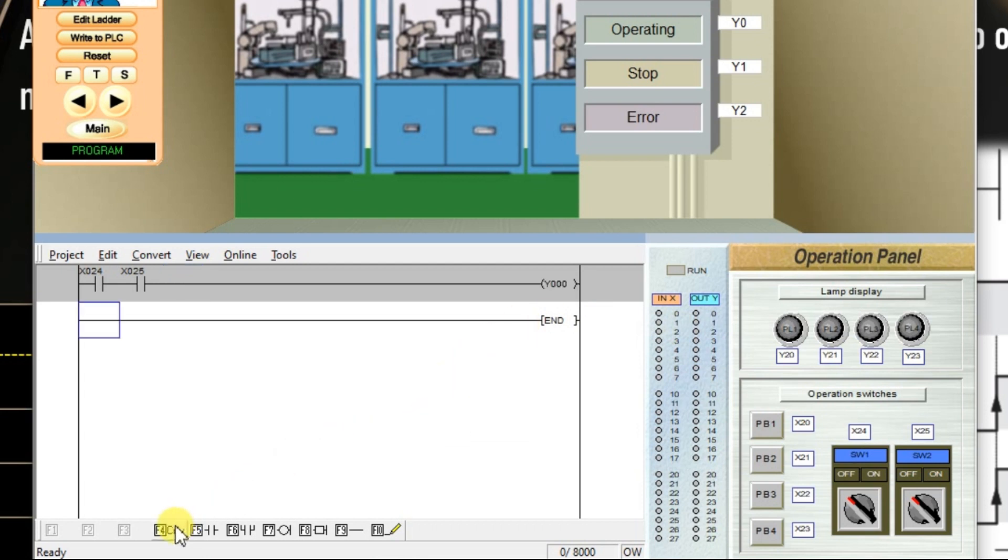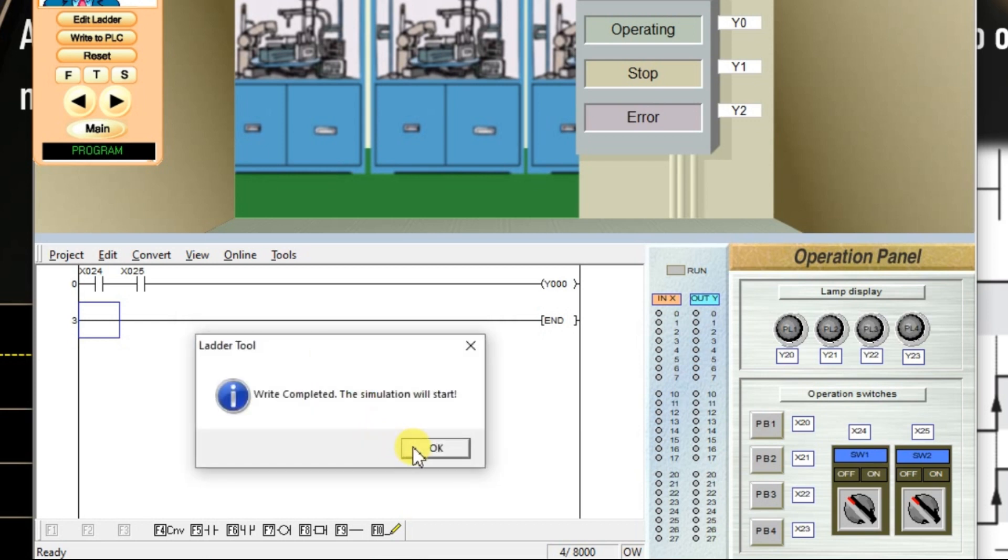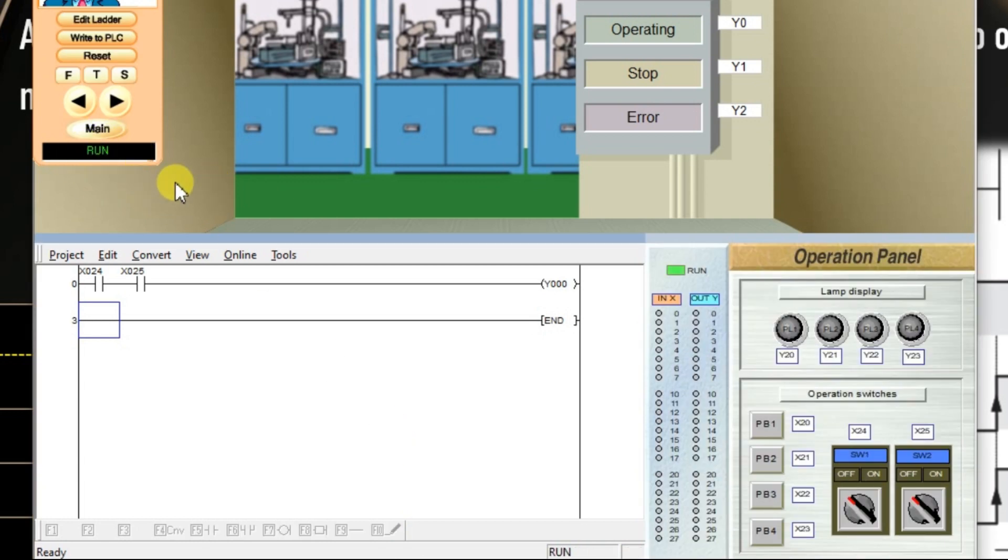So my logic is completed. Click convert. Now the compiling is successfully completed. Now we have to write to PLC. Click write to PLC. So the program is downloaded to PLC. Click OK. Now the PLC is in run mode, so we can do the simulation.